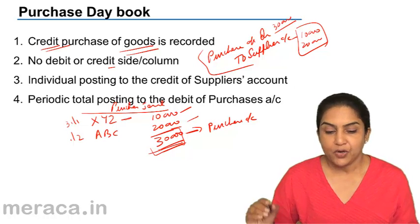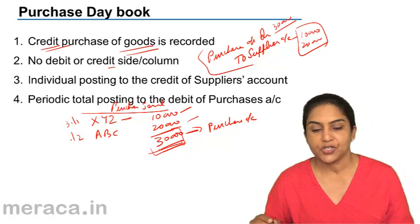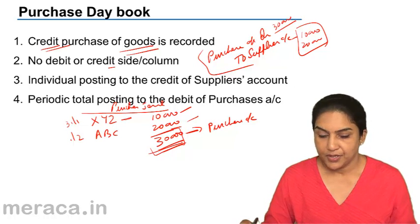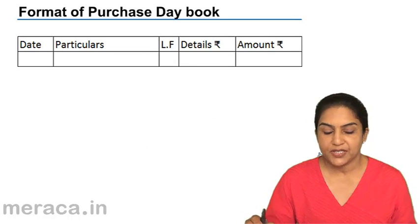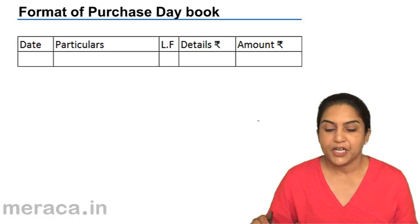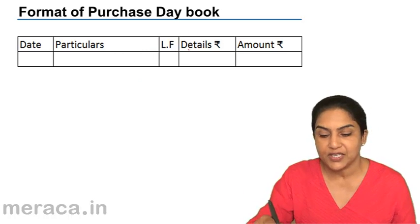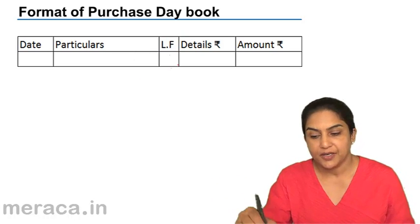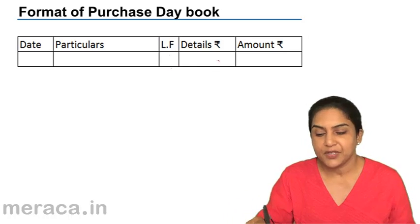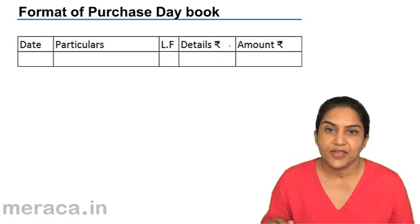So please remember: only credit purchase of goods is recorded in the purchase day book. The format has the date, particulars where we record all the details, the ledger folio — when we post to individual accounts like ABC's or XYZ's, the folio reference is mentioned there — and then a details column for breakups, invoices, transportation charges, and other additions.